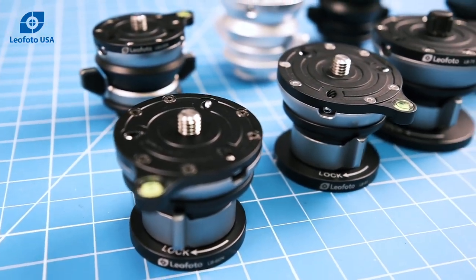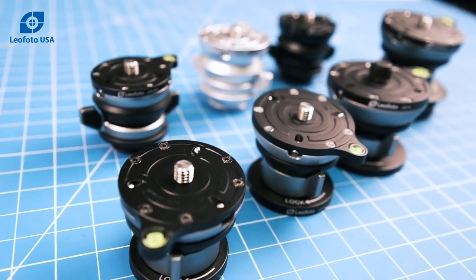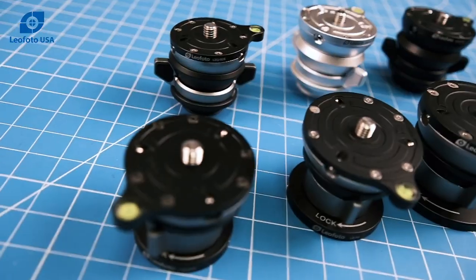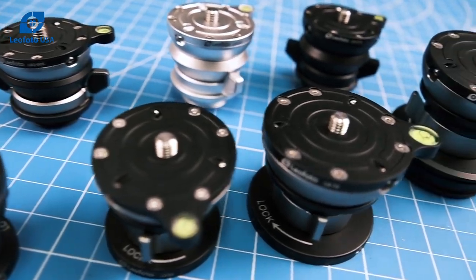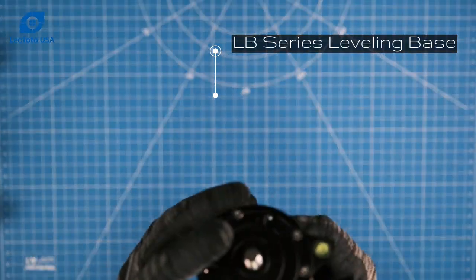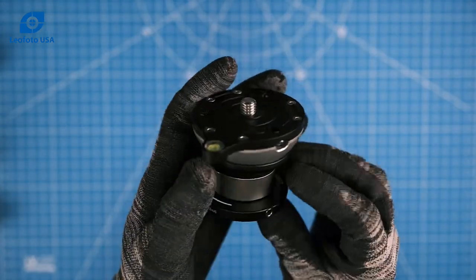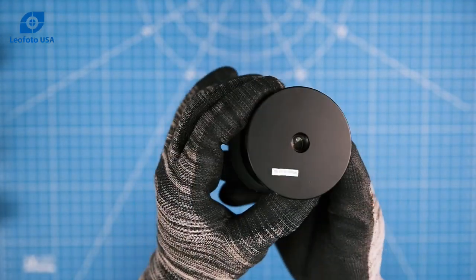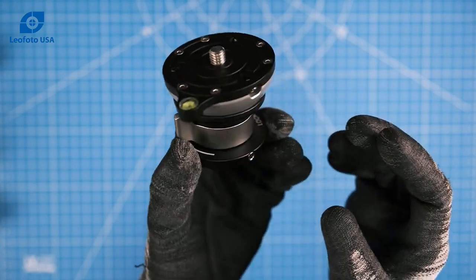Hello, today we have the LB series leveling bases. It comes in three different variations. First off, just the standard LB leveling base. This one mounts with a 3/8 stud. These leveling bases feature a butterfly twist lock collar.